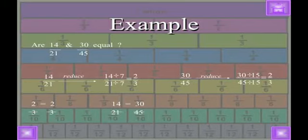Now what about 30/45? When we reduce it, we reduce by 15. So 15 times 2 is 30 and 15 times 3 is 45. When we reduce 30/45 we get 2/3. Both fractions have the same lowest term, that is 2/3, so both fractions are equal.